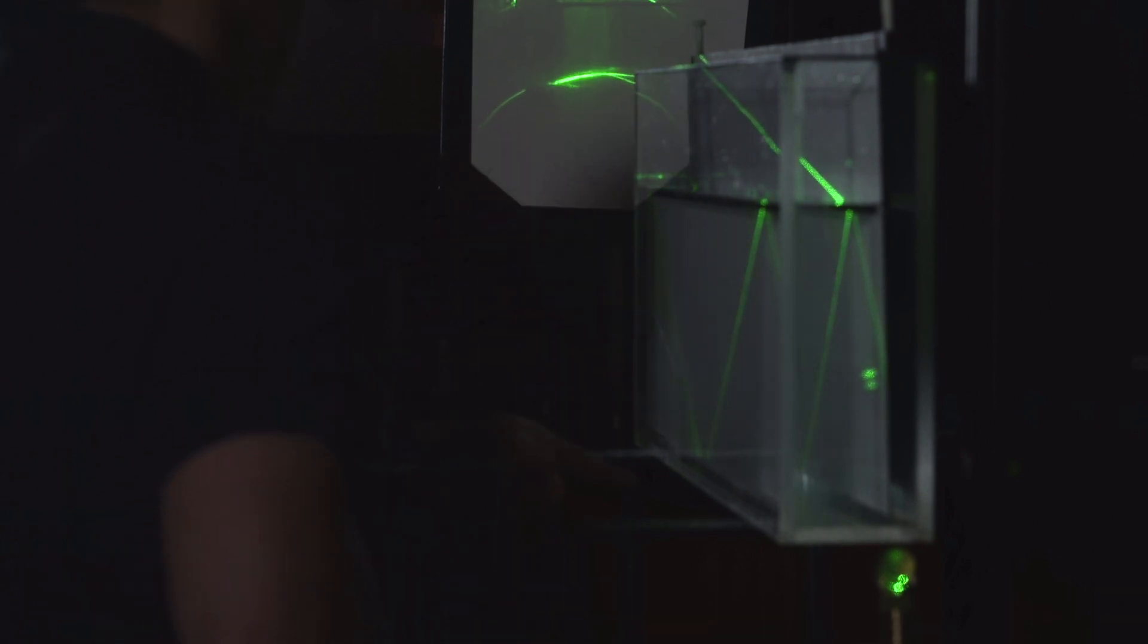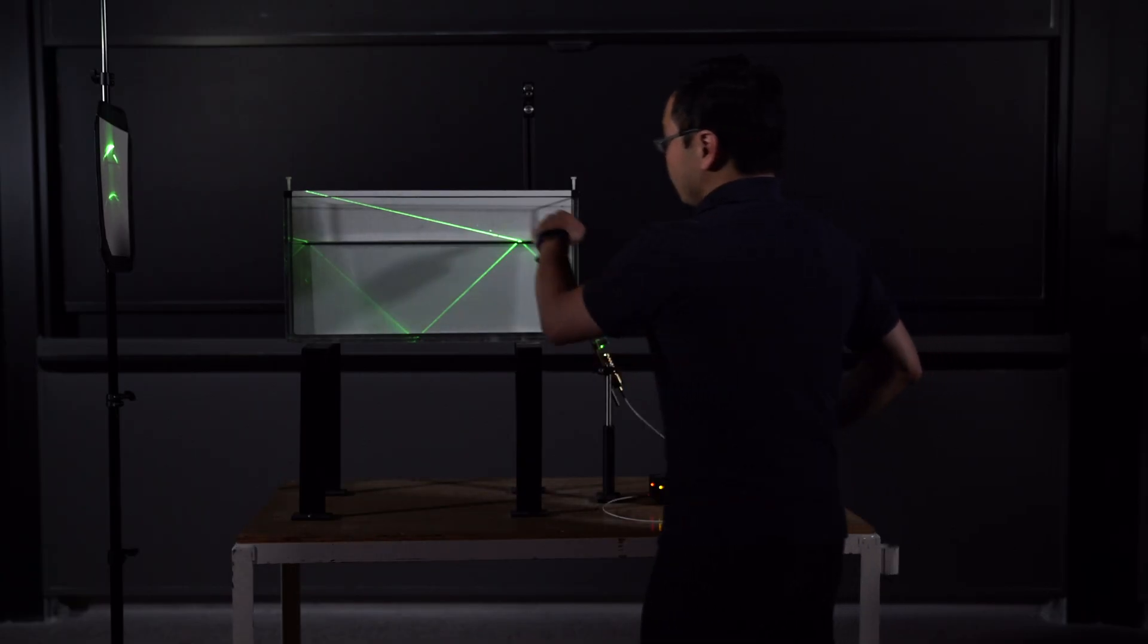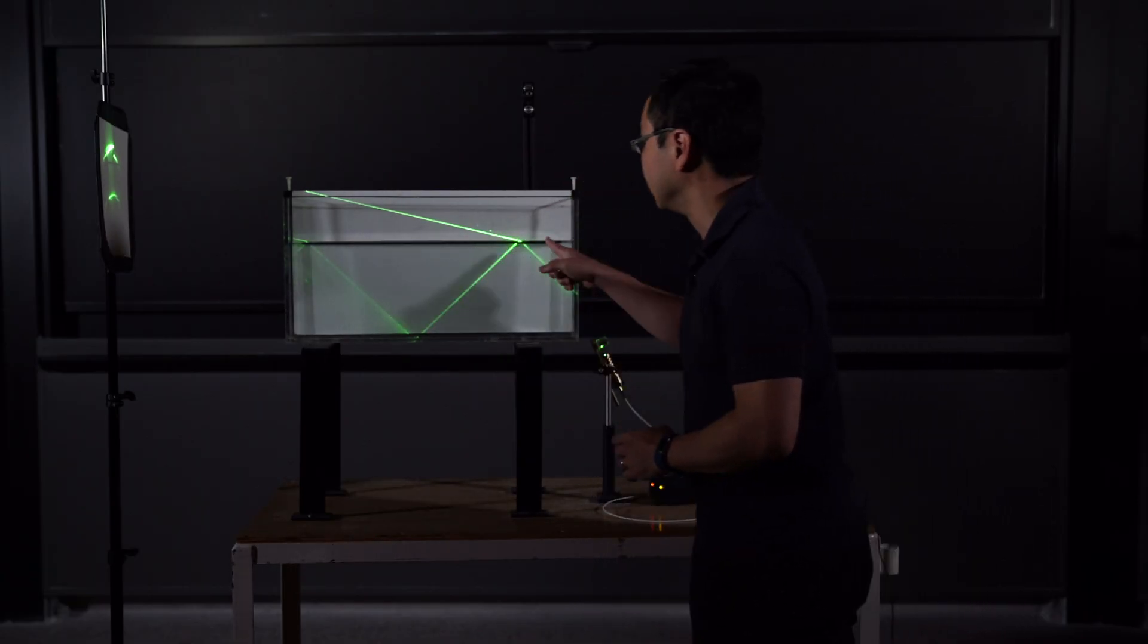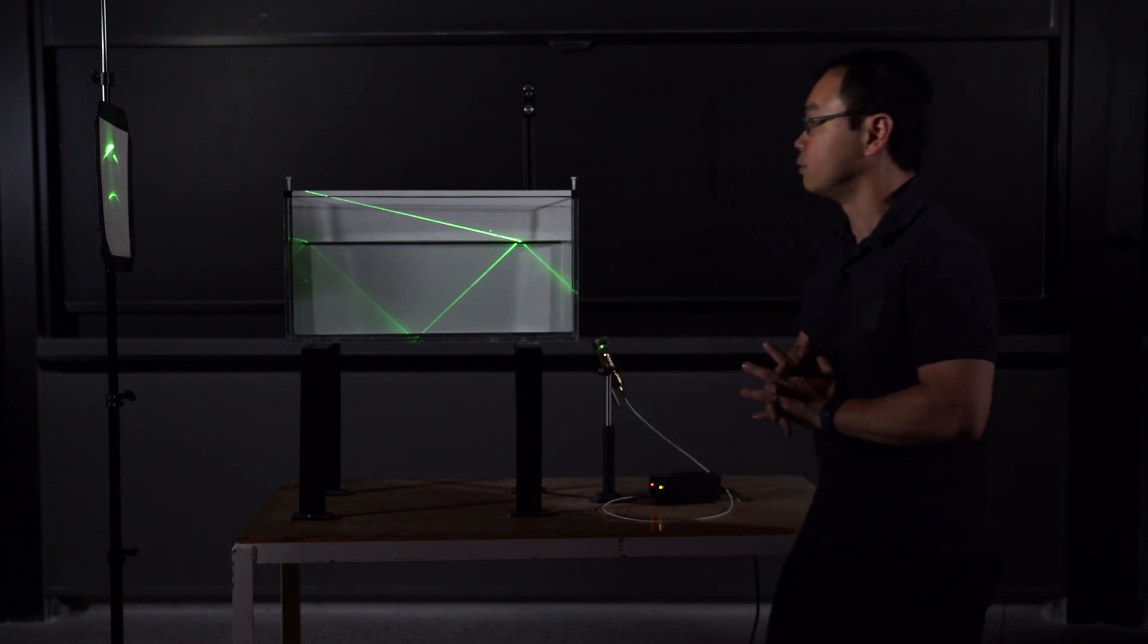And if I continue and reduce even more the incident angle, you can see the internal reflection. You have two times of internal reflection. And the ray goes through the surface twice.